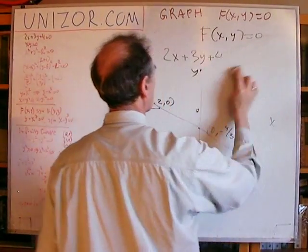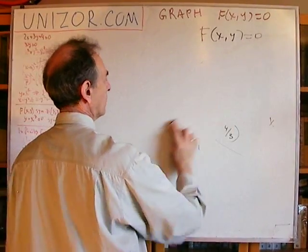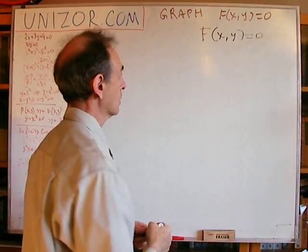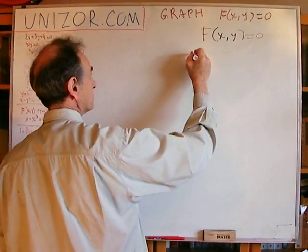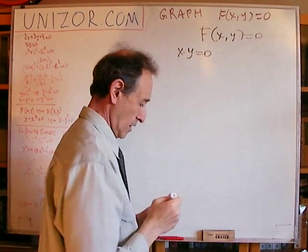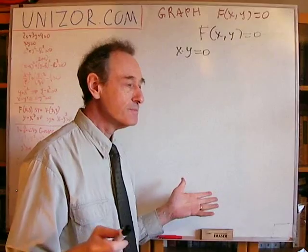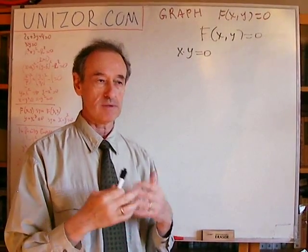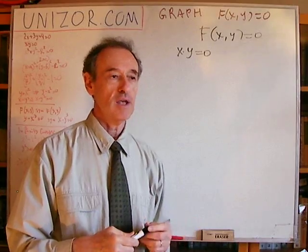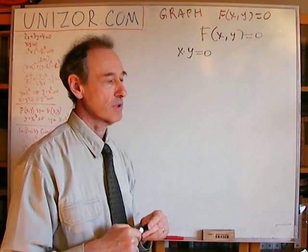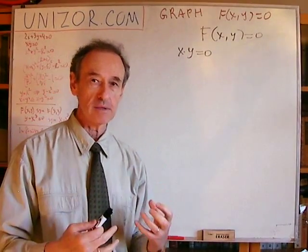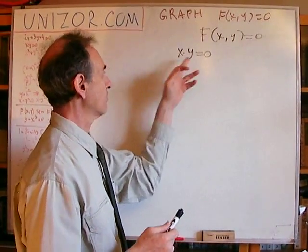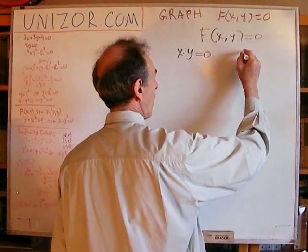Now let's consider a less trivial example — this one can't be easily reduced to a familiar function form. What is the graph of the equation xy = 0? I'm not calling it a function, because as you'll see it's not really a graph of any function in the classical meaning of that word. But what is the graphical representation of this dependency between x and y?